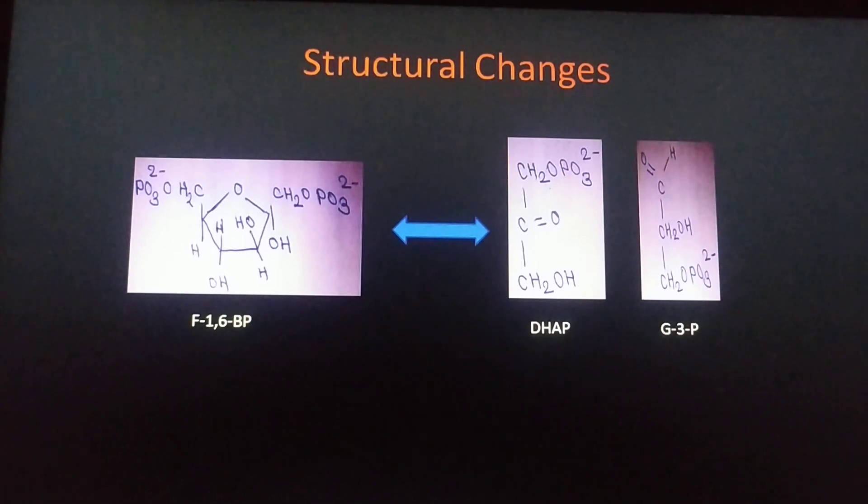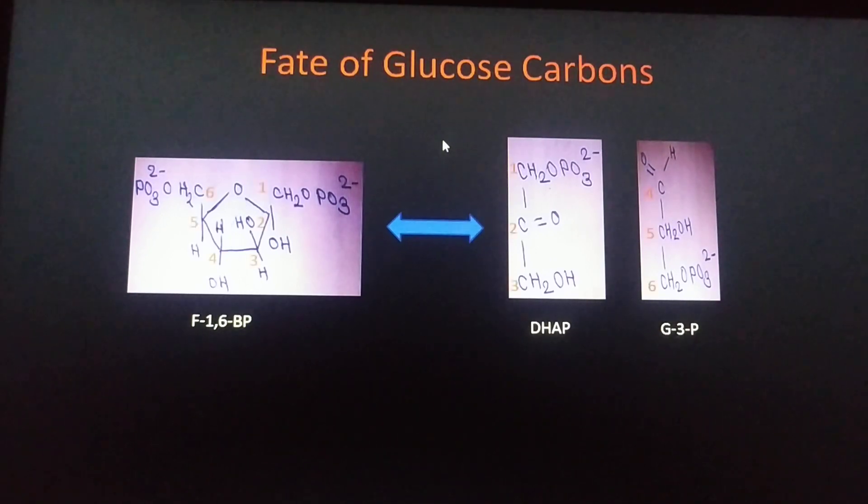See here the blue line appearing here. This blue line indicates that this is the cleavage point. That means carbon number 1, 2, and 3 form this DHAP, whereas carbon number 4, 5, and 6 form this glyceraldehyde-3-phosphate. So now we will see how these changes are taking place.